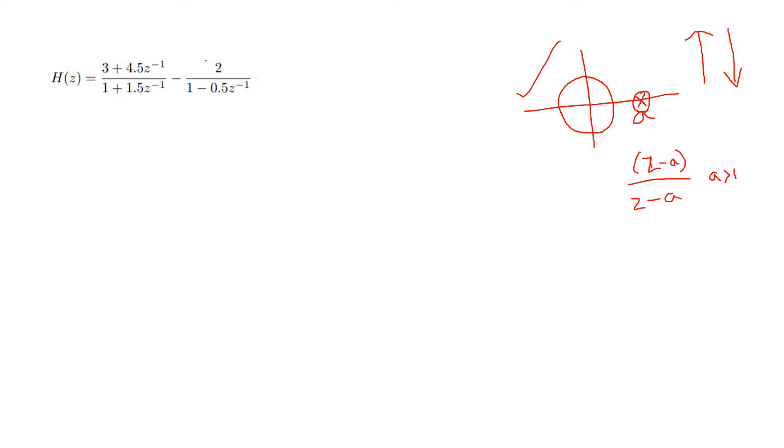For this particular discussion, I am taking one system having this particular transfer function: H(z) equals (3 + 4.5z^(-1)) divided by [(1 + 1.5z^(-1))(1 - 0.5z^(-1))].